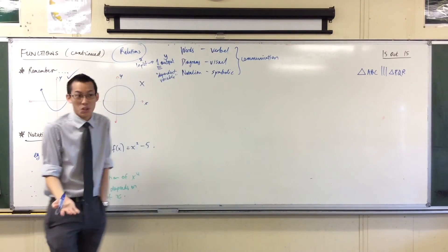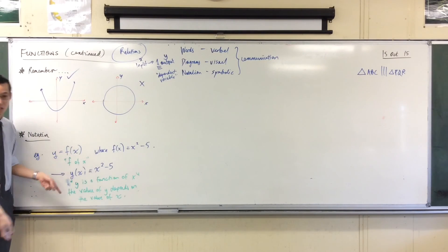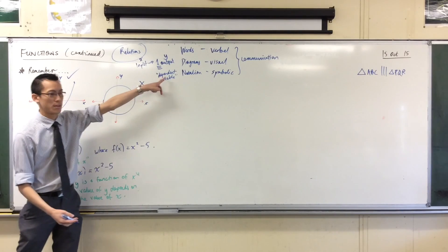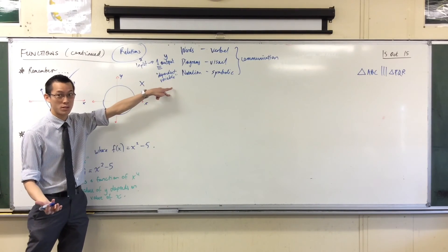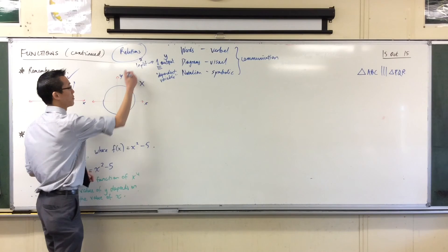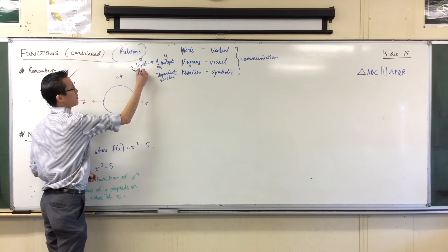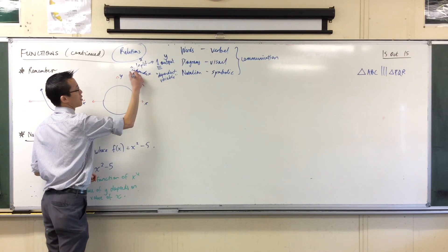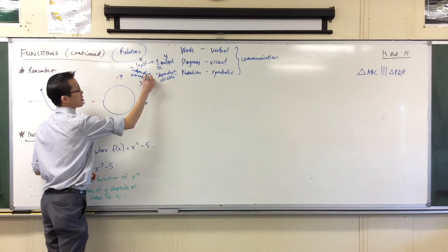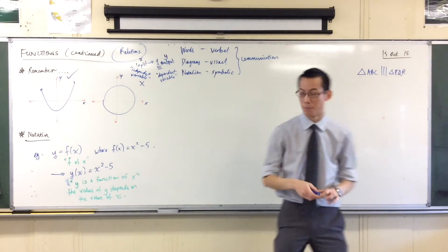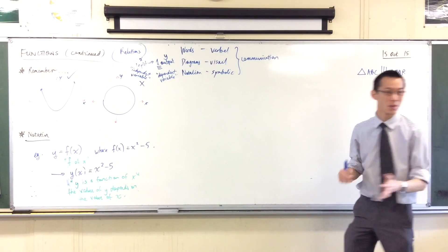X, on the other hand, well, it's not dependent. I can make it 2, I can make it 3, I can make it minus 100. I can make it anything I like. So, therefore, it's not a dependent variable. What's the opposite of dependent? Independent. We call this guy the independent variable.